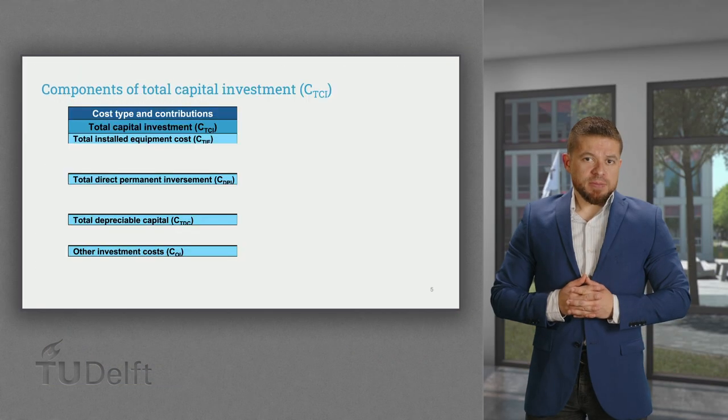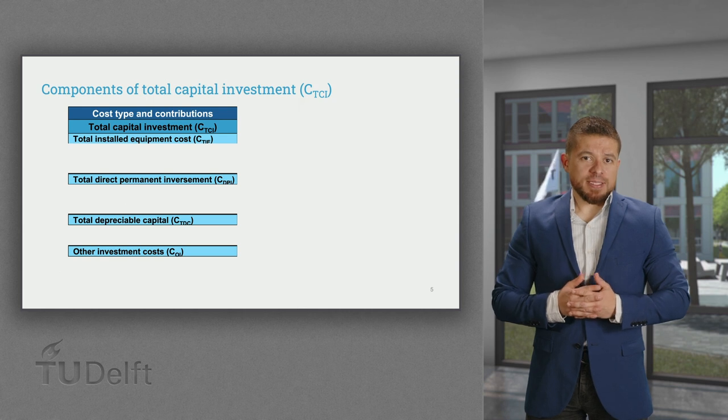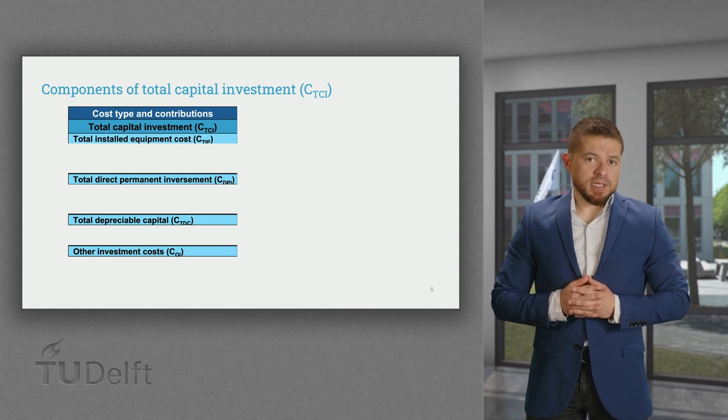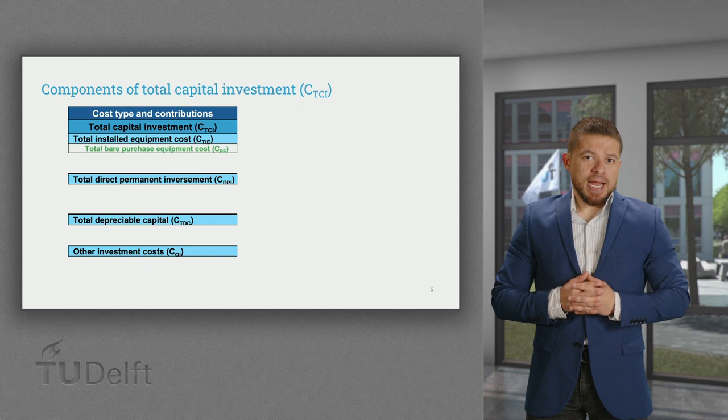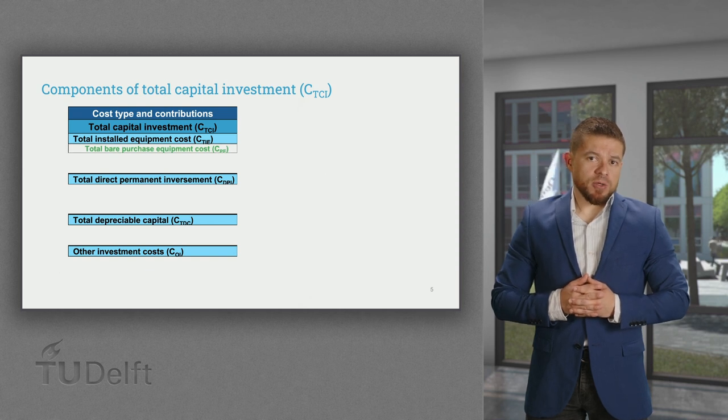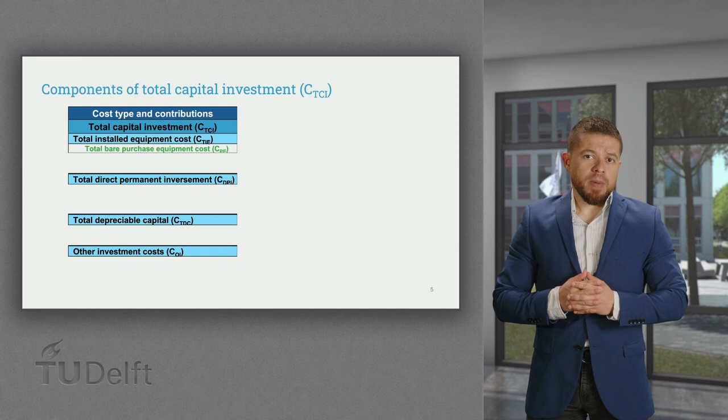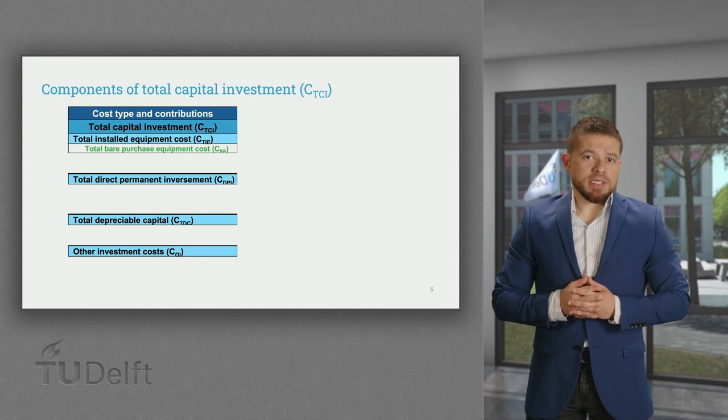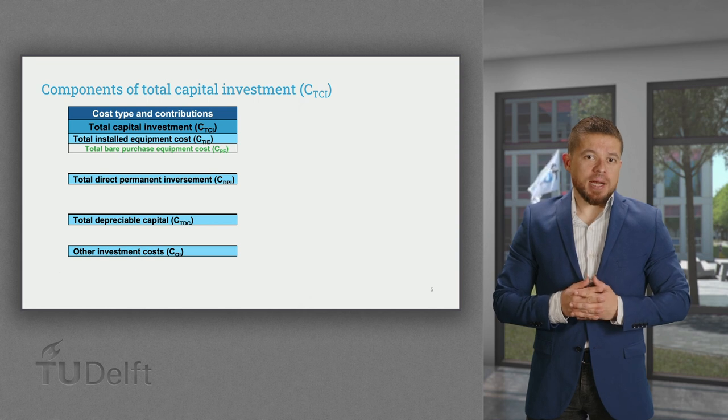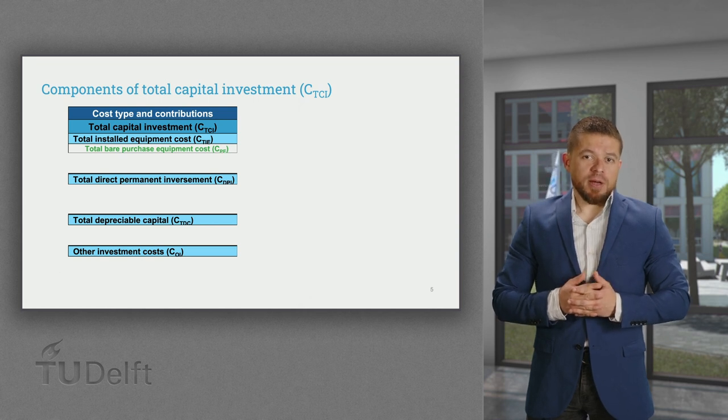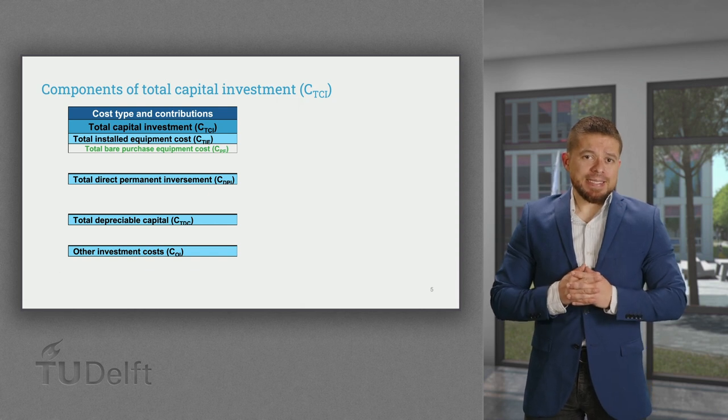The total capital investment is a one-time expense for the design, construction, and start-up of the plant. And this is highly dependent on the total equipment cost, in particular on the total bare purchase equipment cost, CPE, in the table, which refers to cost associated to the design and construction of the process units. Keep this parameter in mind, since it is key to estimate the total capital investment.